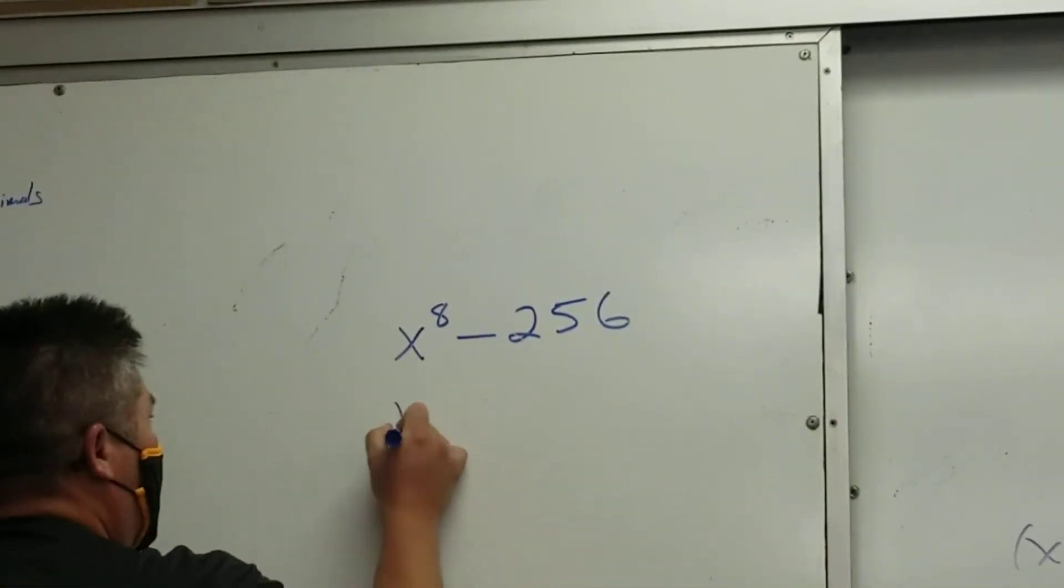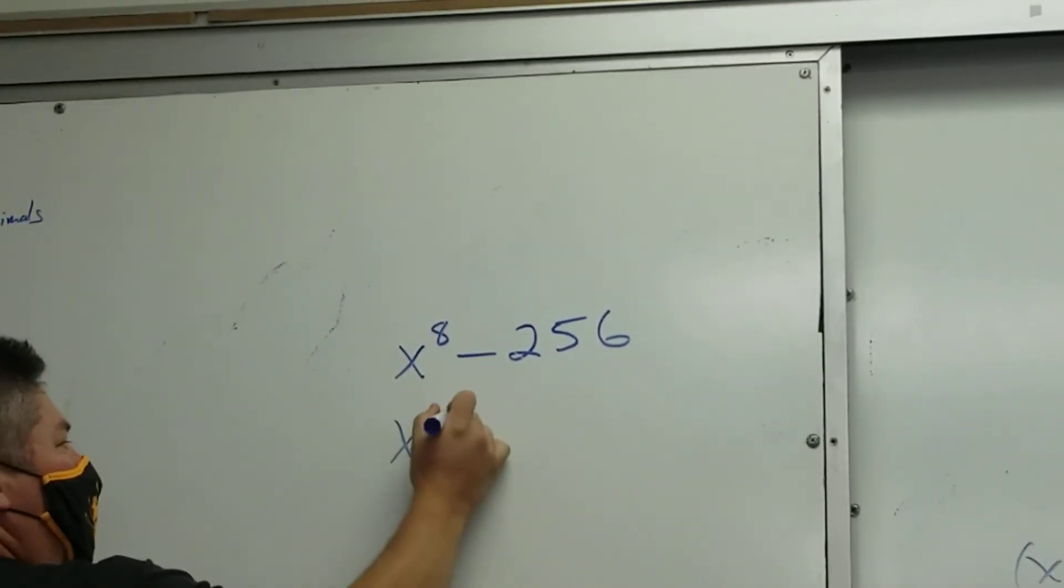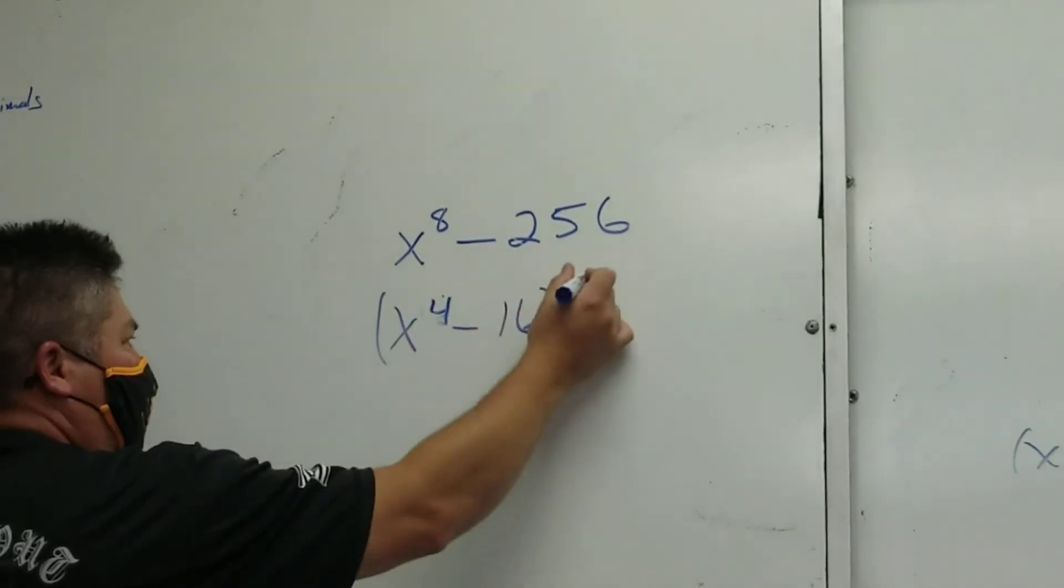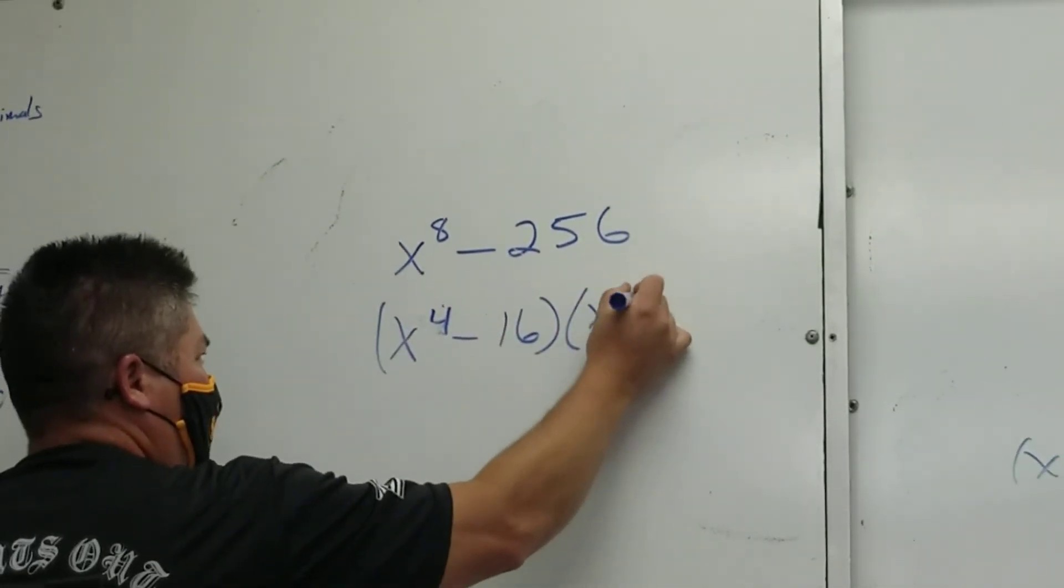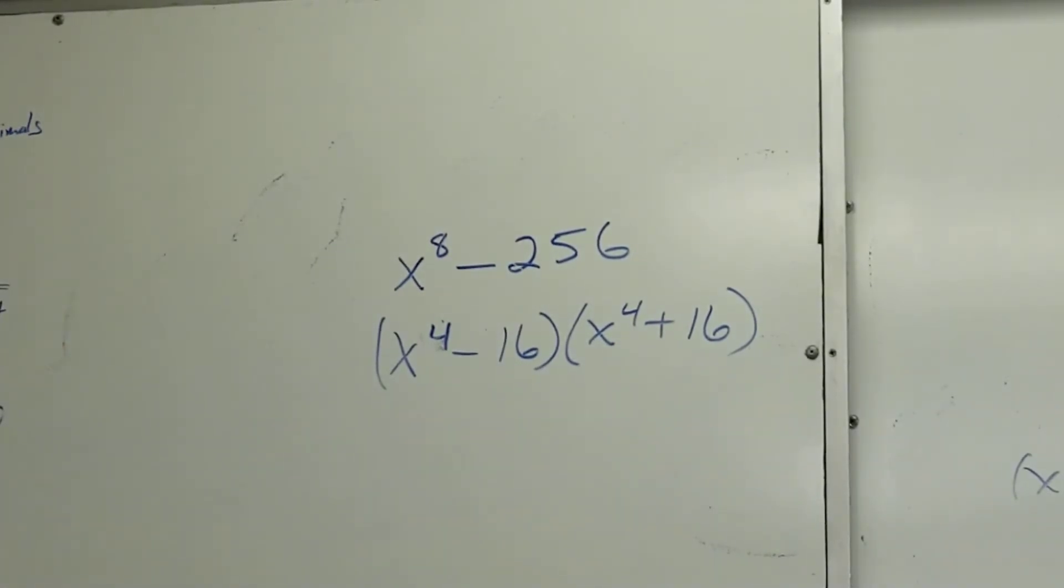So what is this factor to be? x to the 4th minus 16 and x to the 4th plus 16. Does it matter which one was plus and which one was minus? No. Am I done?